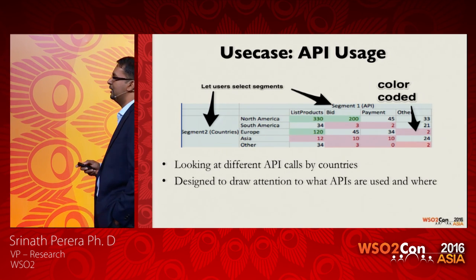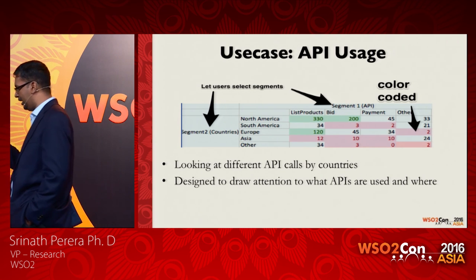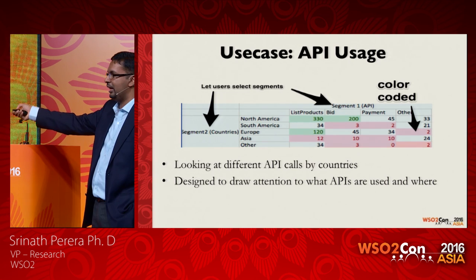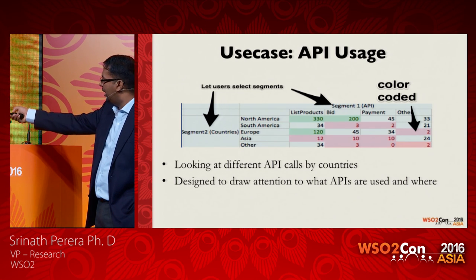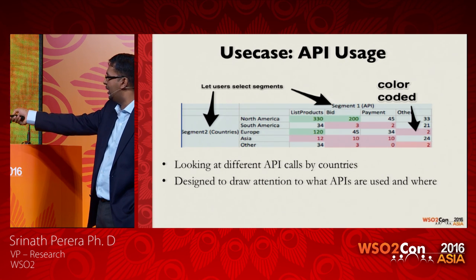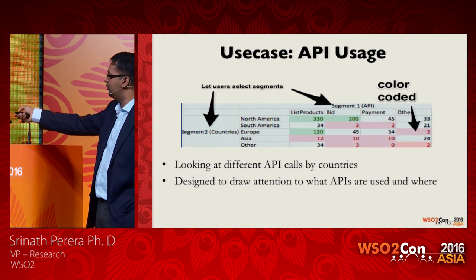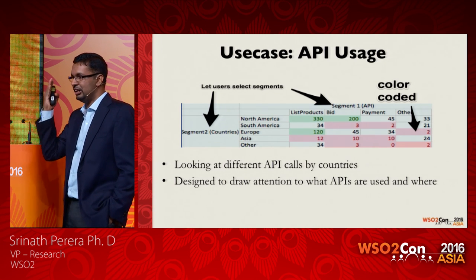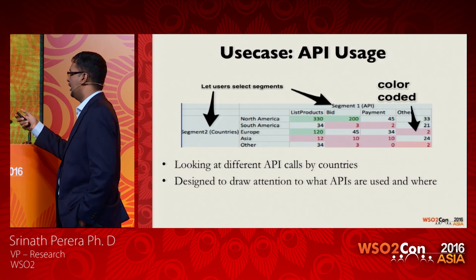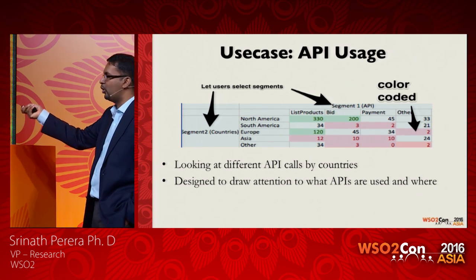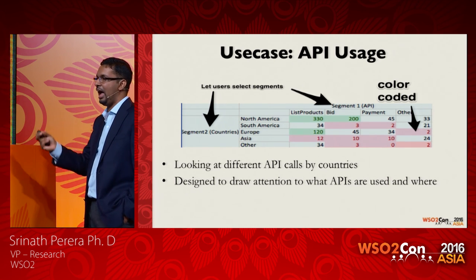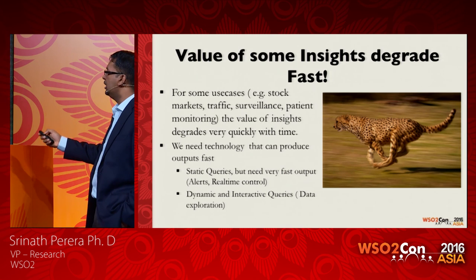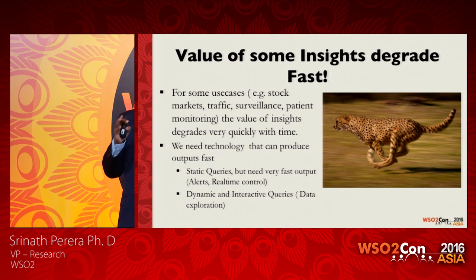Here is a visualization from batch analytics. There are two segments: one is different APIs, the other is different countries, so you can see how different APIs are being used in different combinations by different countries. It's a visualization color-coded to direct your attention, giving you on a single glance an understanding of how things are doing.